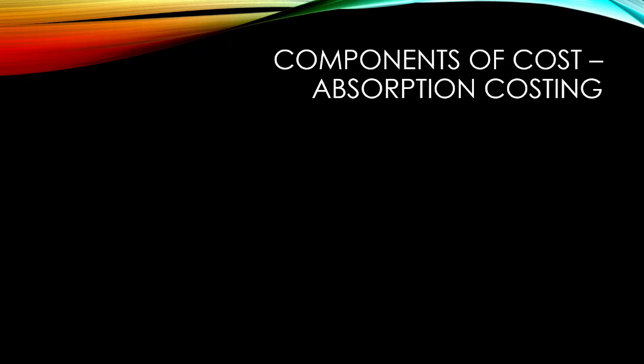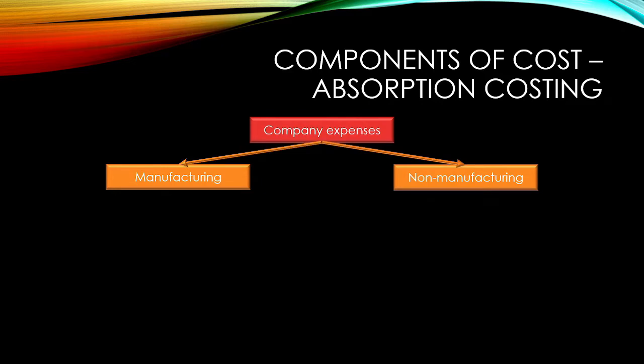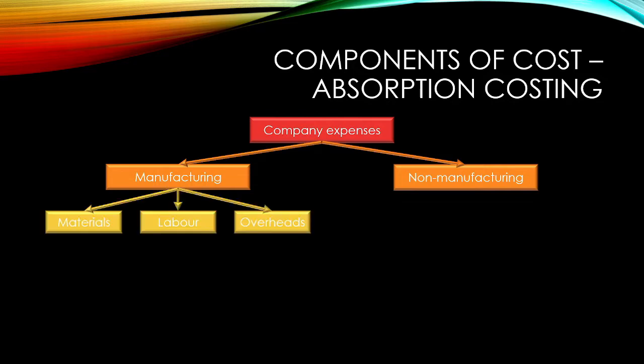Now that we have seen the external reporting requirements, let us consider what absorption costing does and whether it complies with external reporting requirements. In a manufacturing setting, we have two broad cost classifications, namely manufacturing and non-manufacturing costs. Our manufacturing costs can be split into materials, labor, and overheads. Our overheads can be further split into variable and fixed overheads.